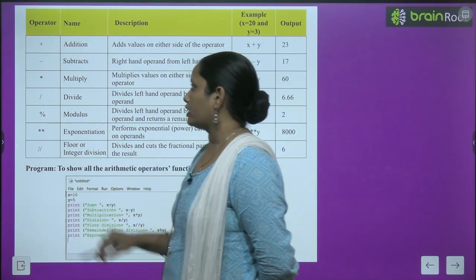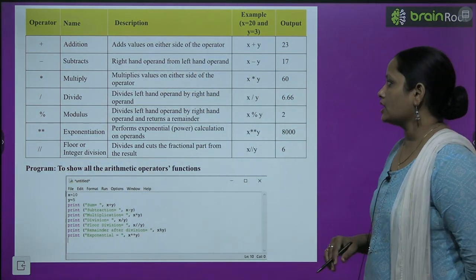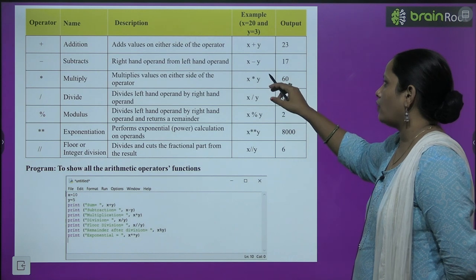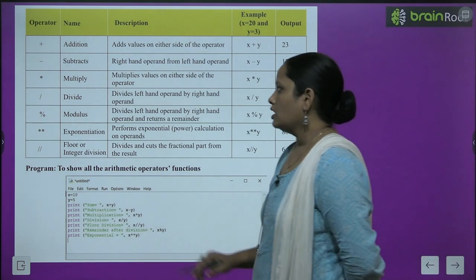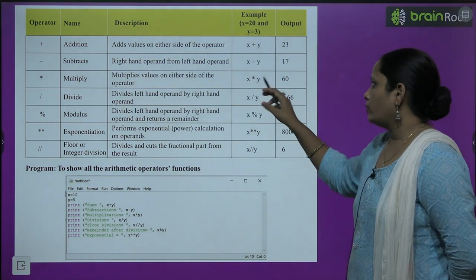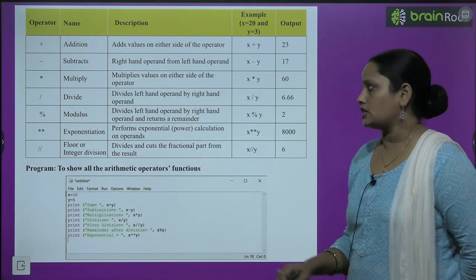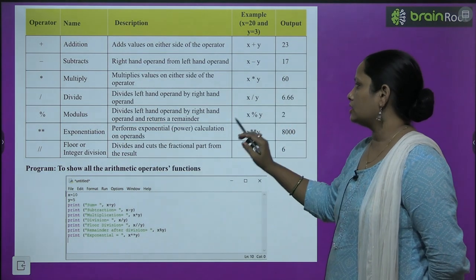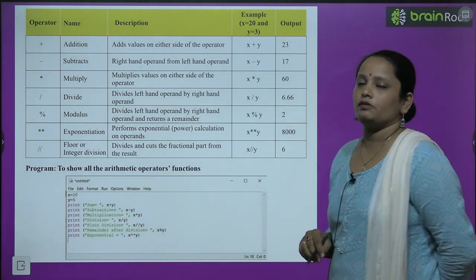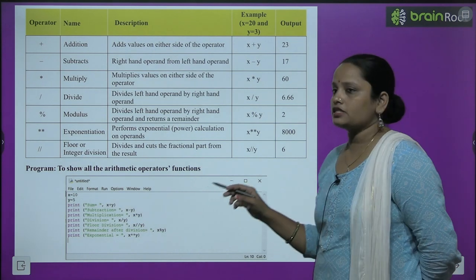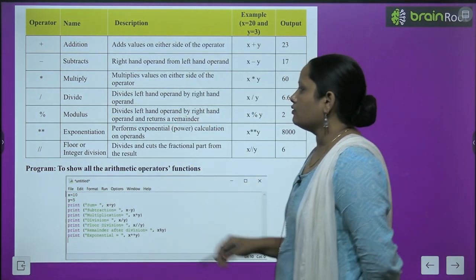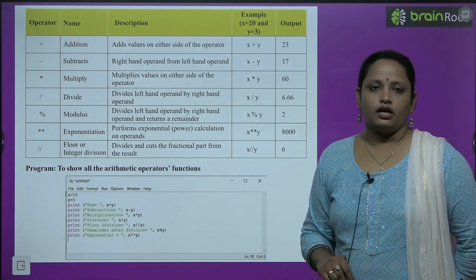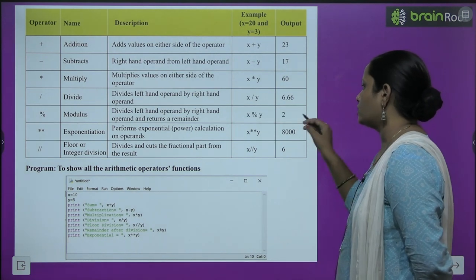Similarly divide ka sign slash hai — x divided by y gives 6.66. Next aata hai percentage ka sign jise modulus kehte hain. Yeh divide karta hai left operand ko right operand se aur remainder deta hai — x modulo y is equal to 2. Next, two multiplication signs are called exponentiation — this performs exponential power. For example, x to the power 2 and multiply y: 20 to the power 2 is 400, multiply 3 gives 1200.